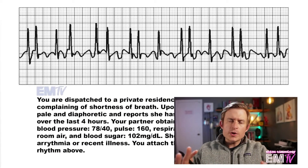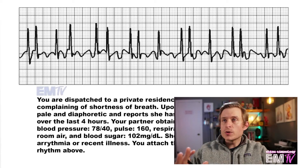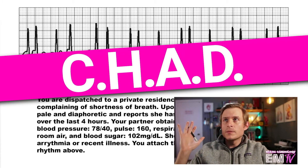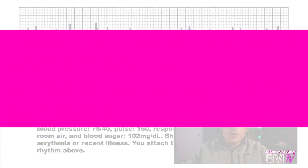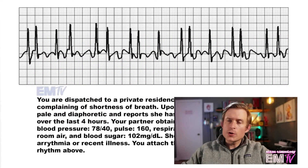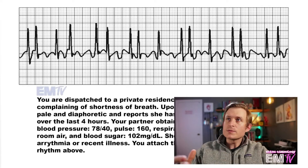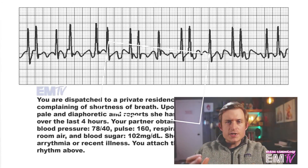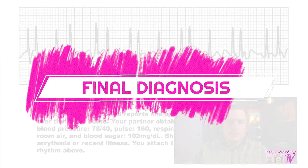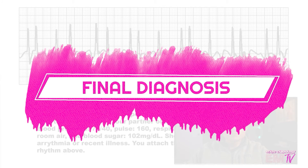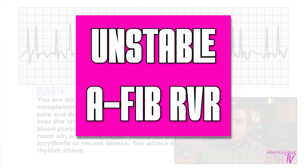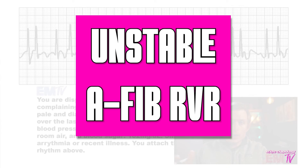Now when determining whether or not a patient is stable or unstable, I use the acronym CHAD — which stands for cardiac insufficiency, hypotension, alteration of mental status, and dyspnea. Based on this patient's current presentation as well as vital signs, she meets several criteria for CHAD. She's hypotensive and dyspneic. So my final diagnosis for Static Cardiology is going to be an unstable AFib RVR.